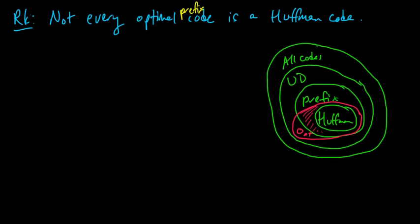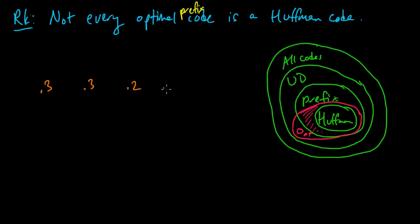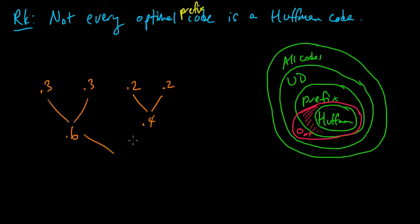So here's the example. Take probabilities 0.3, 0.3, 0.2, 0.2. When we run the Huffman algorithm, we must combine the two 0.2s to get 0.4, then combine the two 0.3s to get 0.6, then combine 0.6 and 0.4 to get 1.